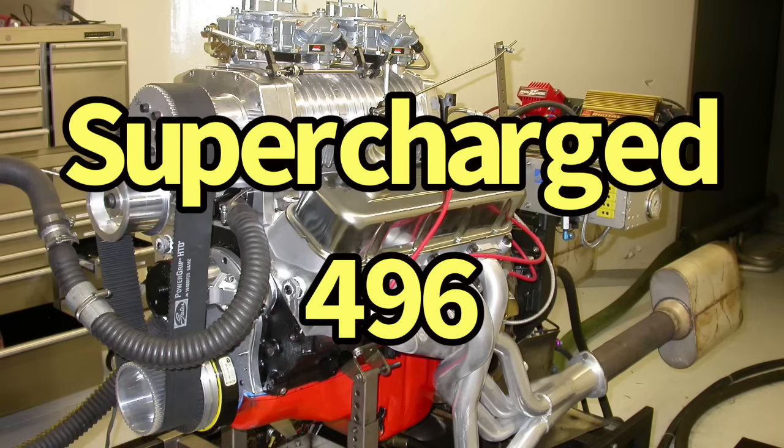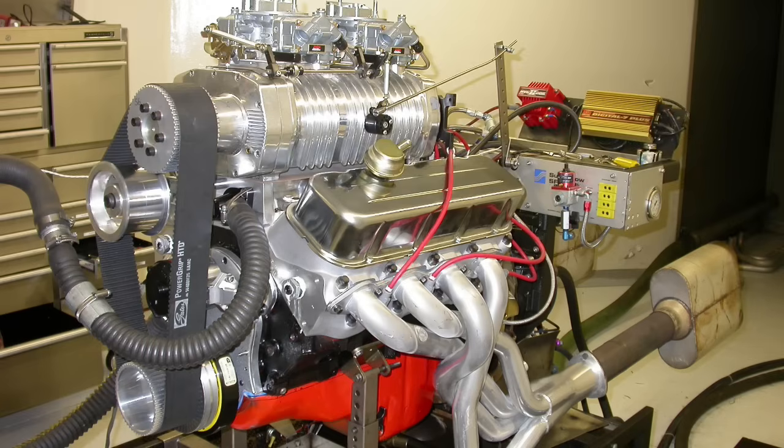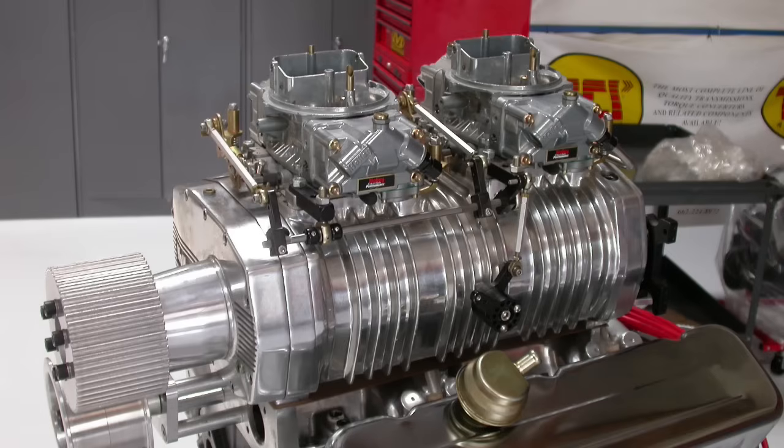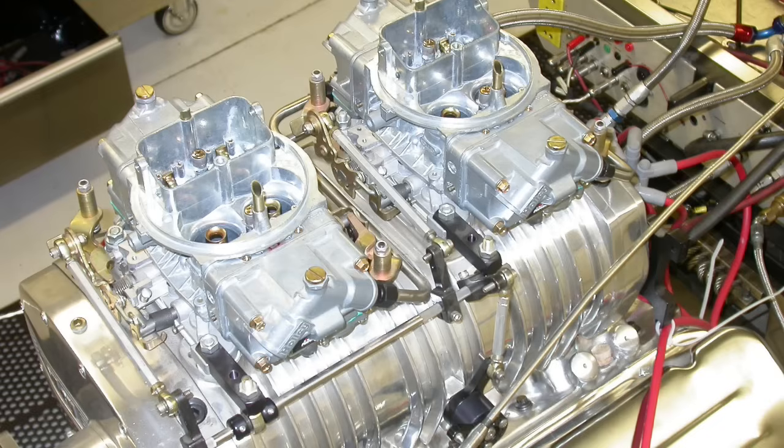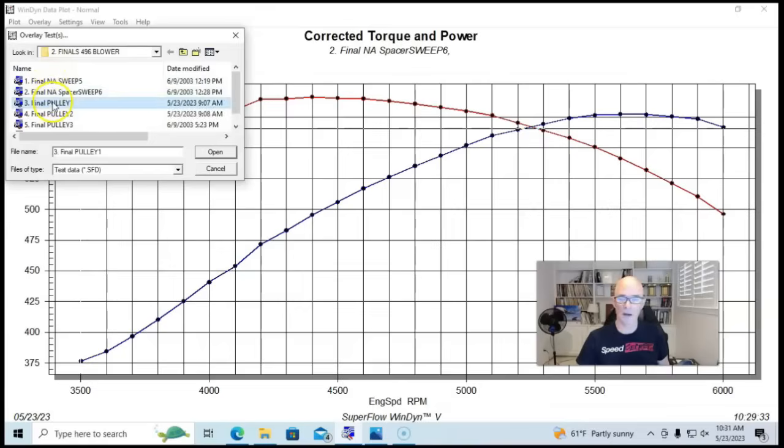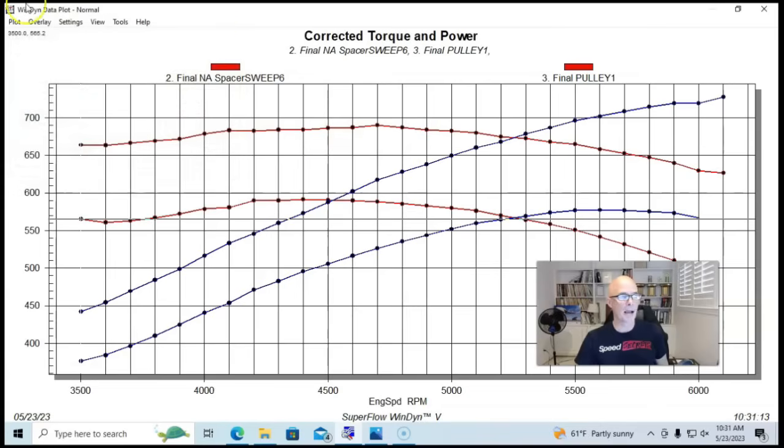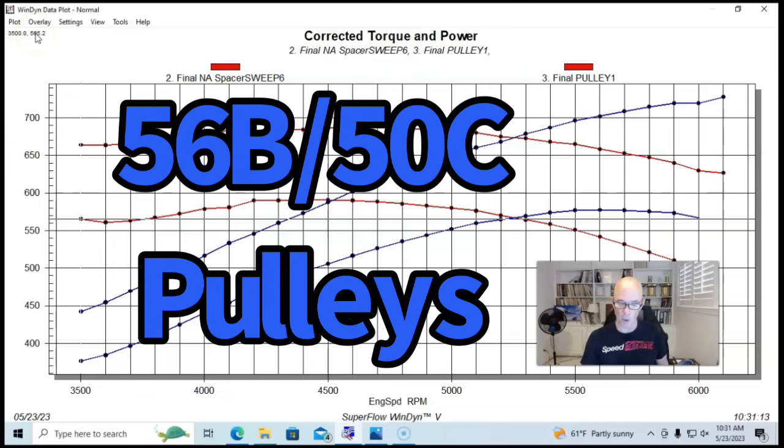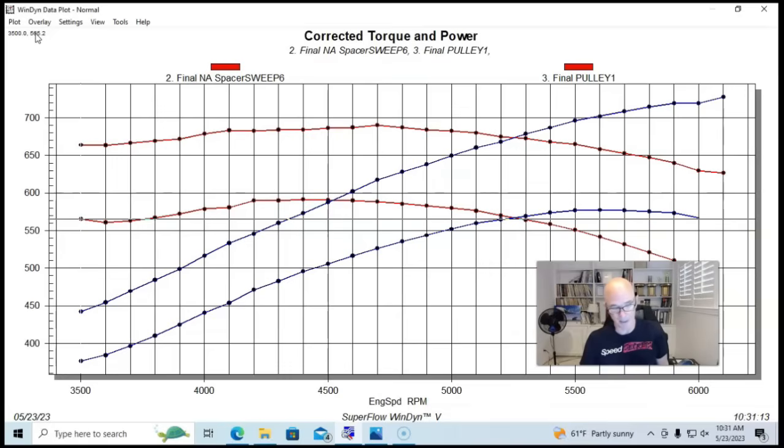For now, let's go ahead and add our 420 supercharger to the 496. Okay guys, we have our Canfield headed 496 up and running now, obviously it's time for boost. So let's go ahead and add our 420 blower, dual 750 blower carburetors on it. And we'll start off with a fairly mild pulley ratio. In fact, this was with a 56 blower pulley and a 50 tooth crank pulley. So we're not spinning that thing very fast.